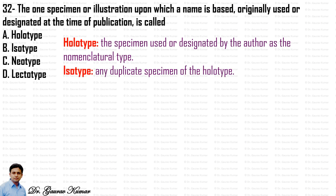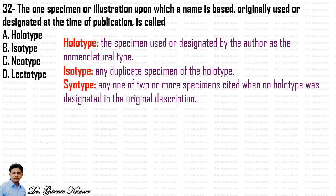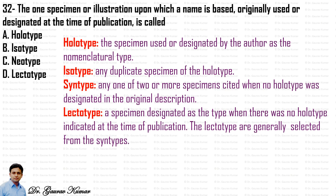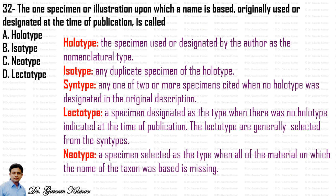The holotype is the specimen used or designated by the author as the nomenclatural type. Isotype is any duplicate specimen of the holotype. Syntype is any one of two or more specimens cited when no holotype was designated in the original description. Lectotype is a specimen designated as a type when no holotype was indicated at the time of publication; lectotypes are generally selected from the syntypes. Neotype is a specimen selected as a type when all original material is missing. The correct answer is holotype.